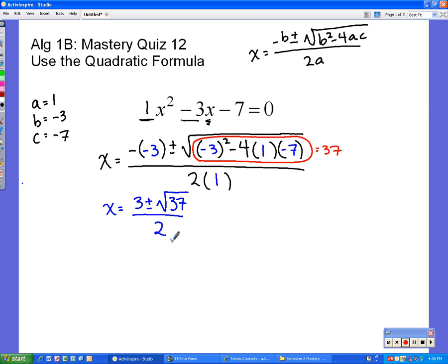And now, this is when I want to split it up with my plus in one equation and my minus in the other. So, I'm going to split this into the two different pieces now. So, one of these says x equals 3 plus the square root of 37 divided by 2. And the next one says x equals 3 minus the square root of 37 divided by 2.